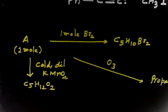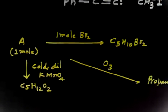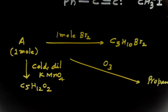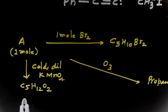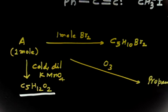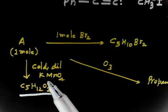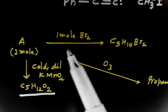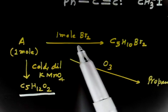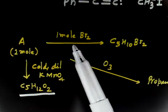Now let us discuss the next problem. 1 mole of compound A reacts with 1 mole of bromine and gives C5H10Br2. And if A is treated with cold dilute KMnO4, it forms C5H12O2. In cold dilute KMnO4, 2 OH groups get added — that is hydroxylation. 1 mole of bromine added means 1 double bond.